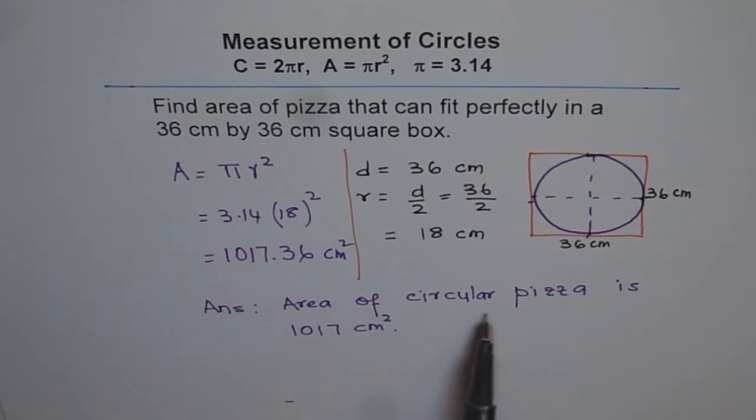Therefore, area of circular pizza is 1017 cm square which can fit into this square box. Thank you.